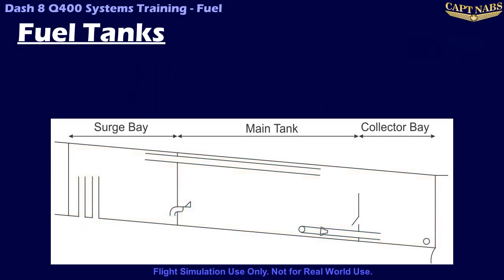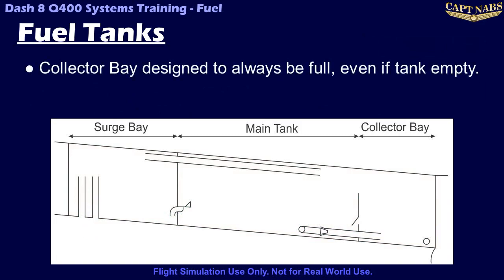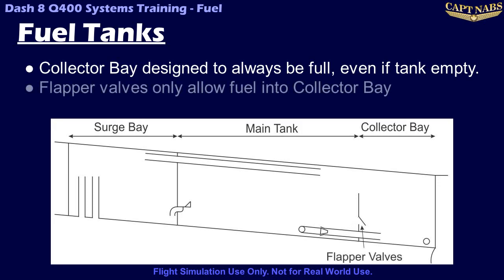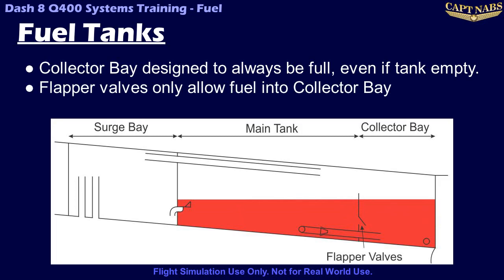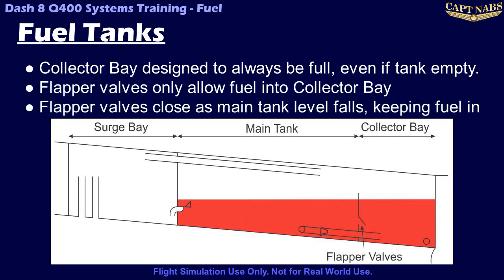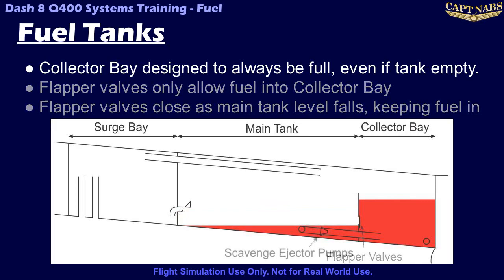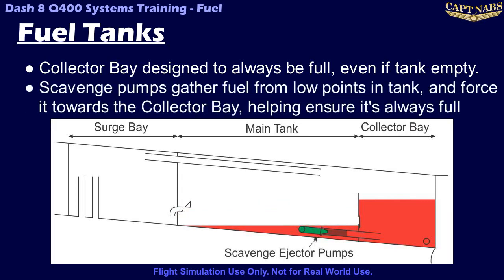The collector bay is located at the inboard aft corner of the main tank. The purpose of the collector bay is to ensure the engine is always supplied with fuel, regardless of airplane attitude and quantity available in the main fuel tank. The collector bay wall contains a number of flapper valves which open to allow fuel into the collector bay from the main tank, but close when the level in the main tank falls, keeping the fuel in the collector bay. Additionally, a number of scavenge pumps collect fuel from various low points in the main tank, and transfer it further inboard towards the collector bay.